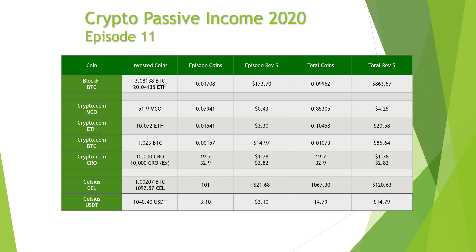Going forward in the next update, I'm actually going to be splitting my Bitcoin and Ethereum loans with BlockFi into two separate lines, paid out in their respective currencies. So there'll be two lines for BlockFi. The figures this update: $173.70 from our BlockFi payout on the first of the month, 43 cents for our MCO Crypto.com loan, $3.30 for the Ethereum loan on Crypto.com, $14.97 for the BTC loan, and our Celsius BTC loan - paid out in Celsius tokens - was $21.68.